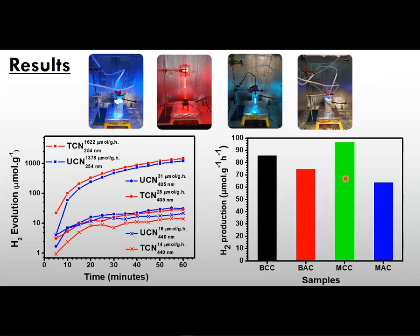We achieved a high hydrogen evolution rate of 97 micromoles per gram of photocatalyst per hour using magnesium aluminate that was calcined in a carbon atmosphere. We also achieved a high rate of 1,622 micromoles per gram of photocatalyst per hour using the thiourea-derived graphitic carbon nitride under UV light, which was our best result under these conditions. Thank you for your time.